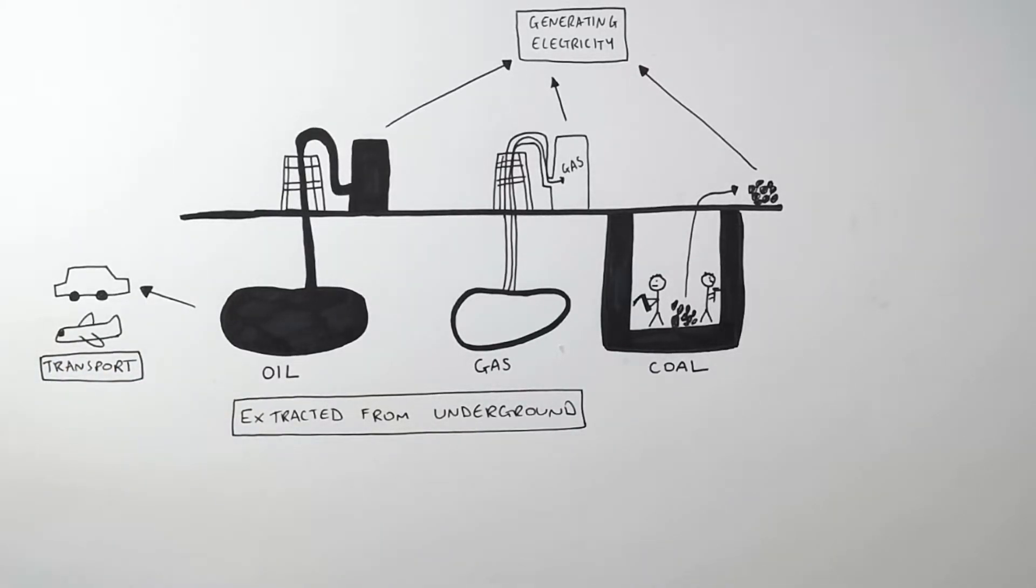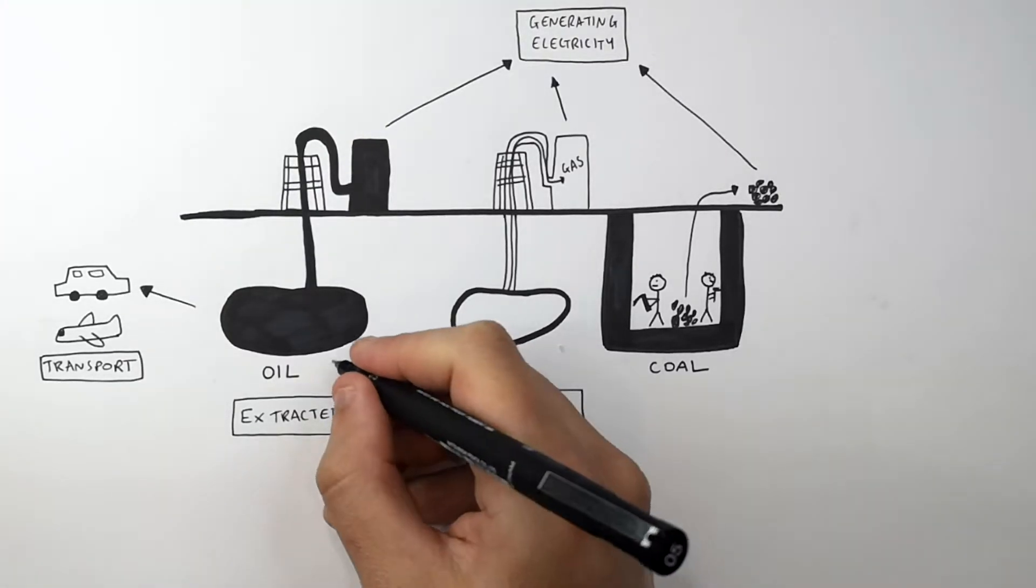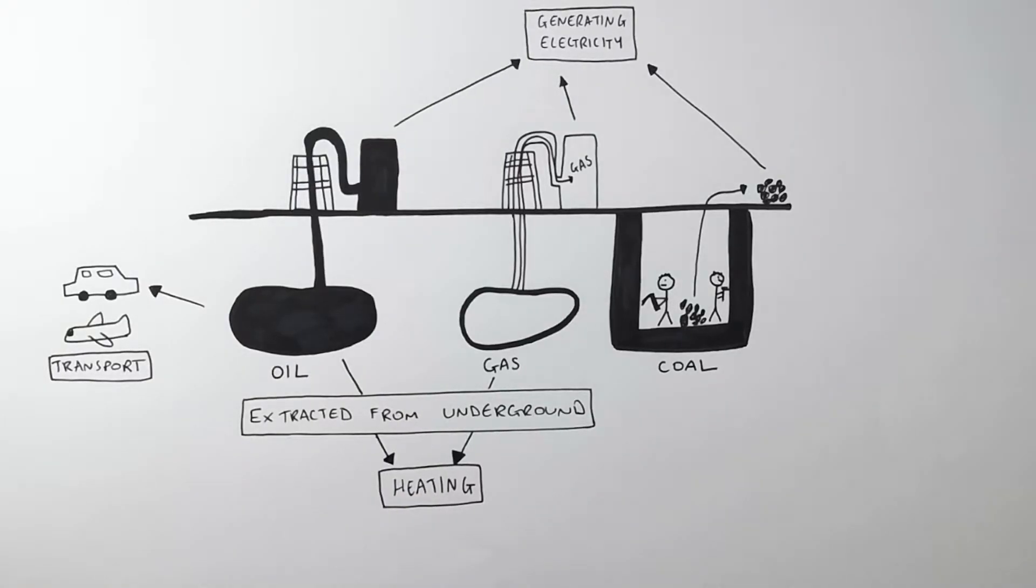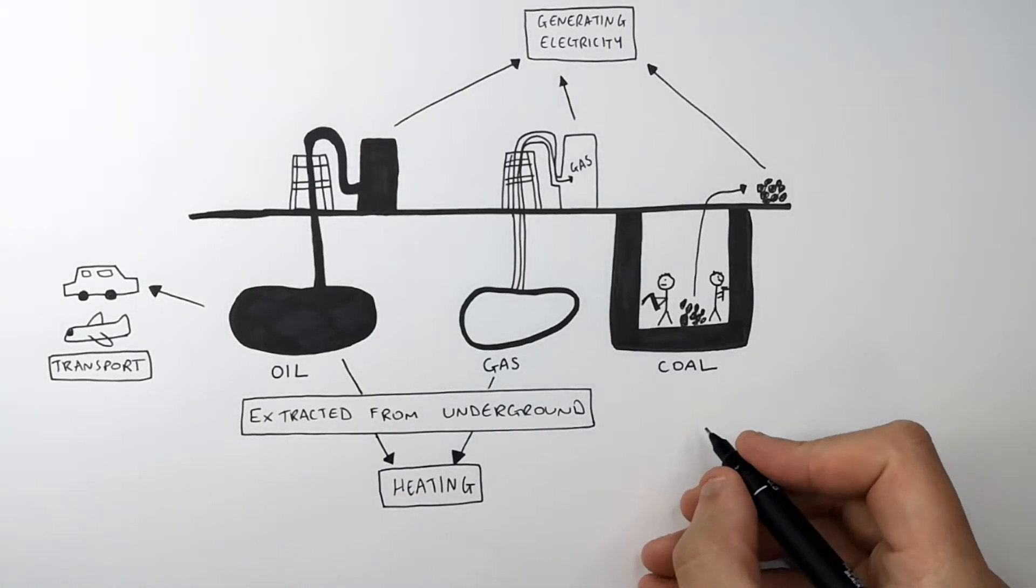Coal and gas are not used in transportation. Gas and oil are used in heating, so in the house you can use oil and gas for heating. You can burn coal to heat a house but it's not very common nowadays.